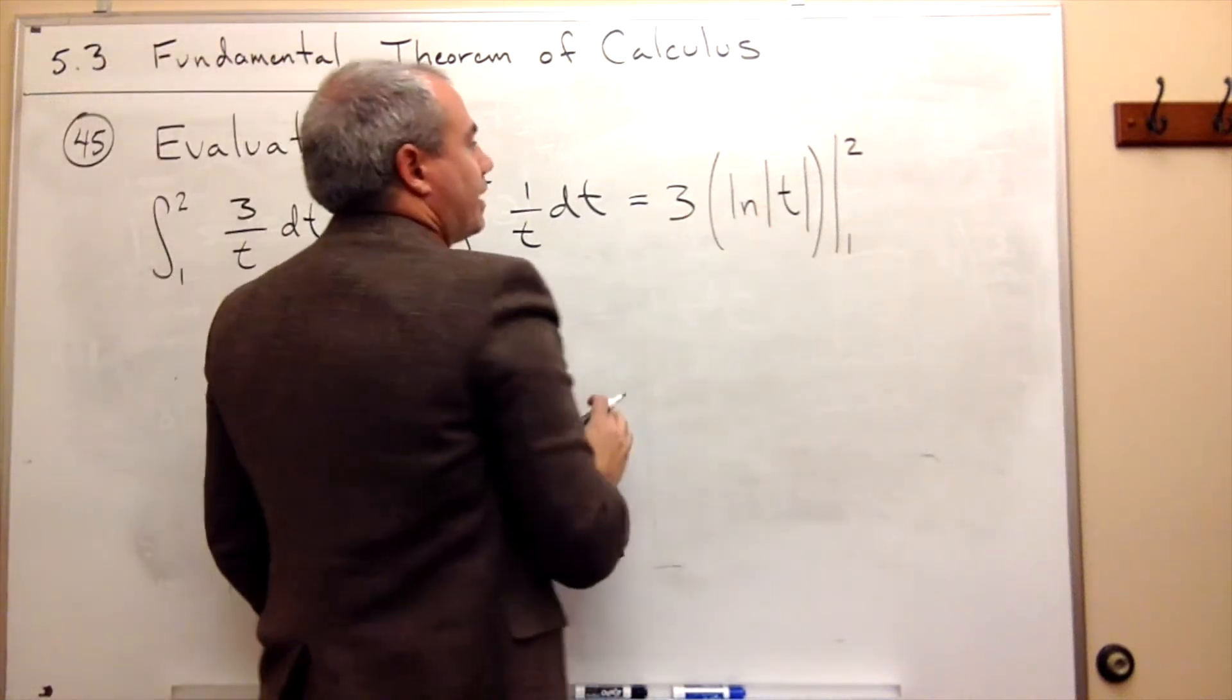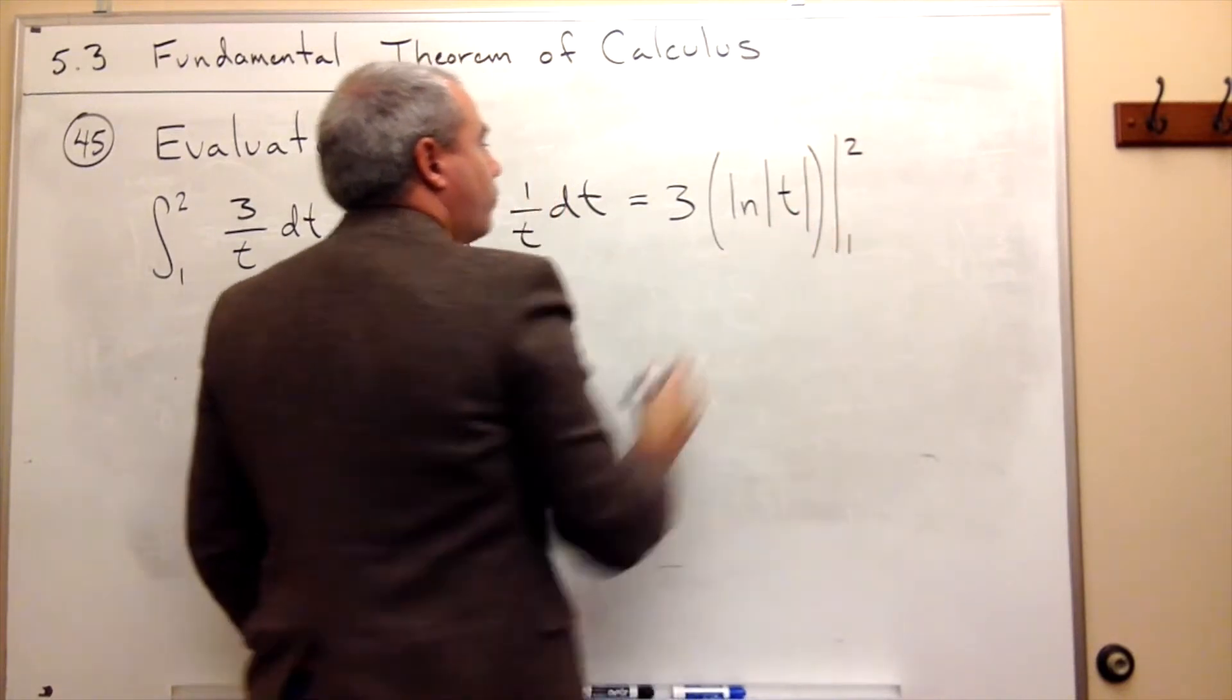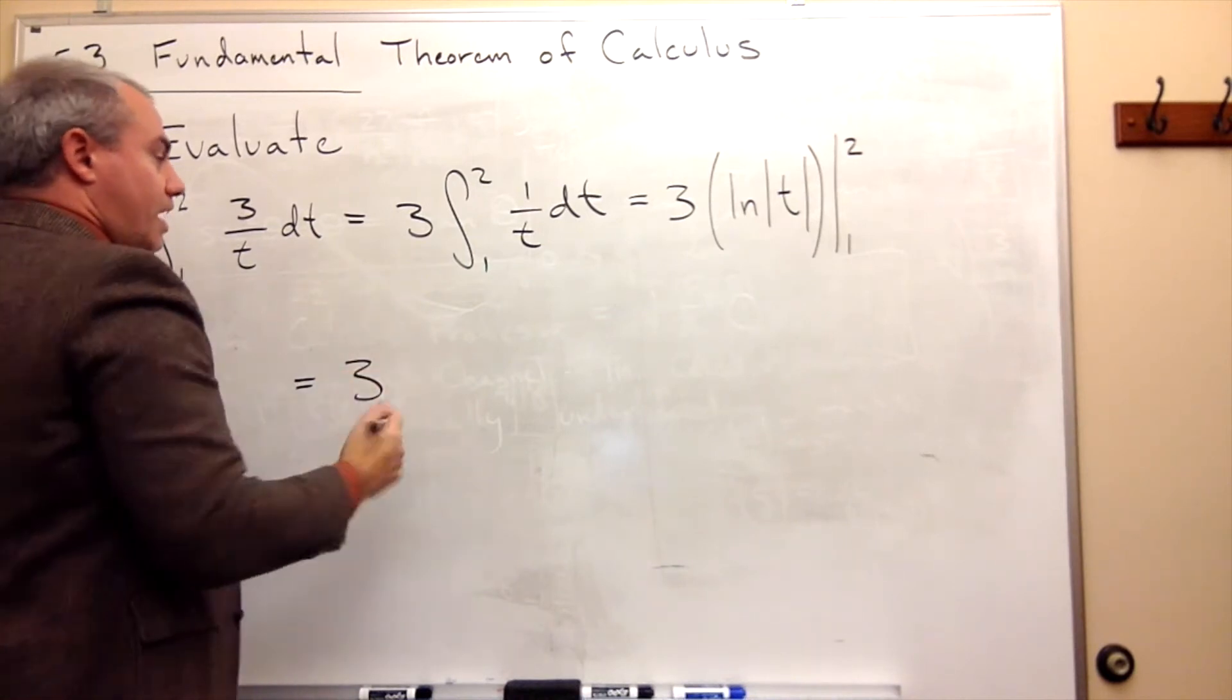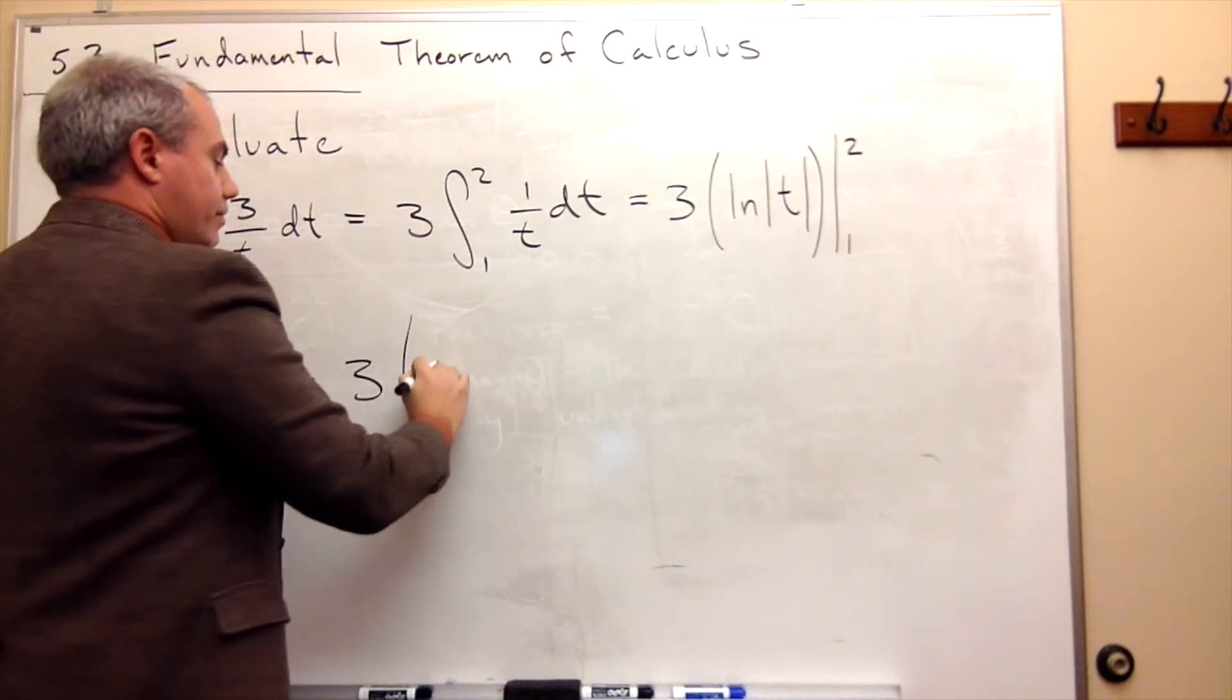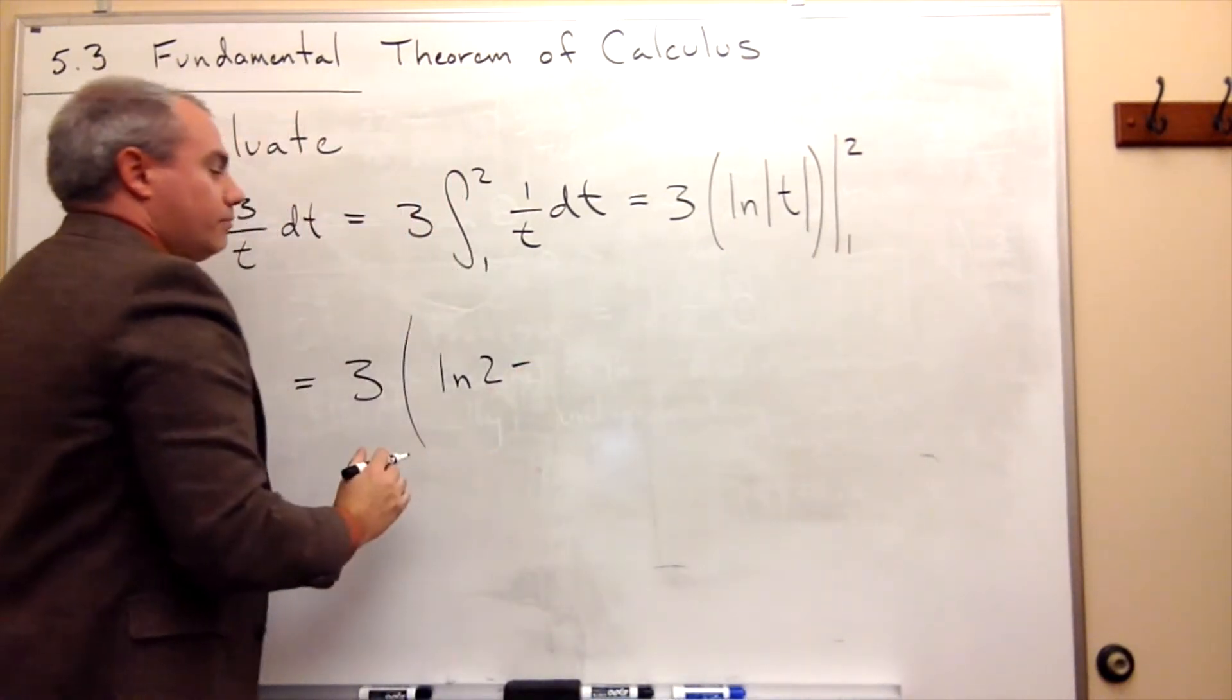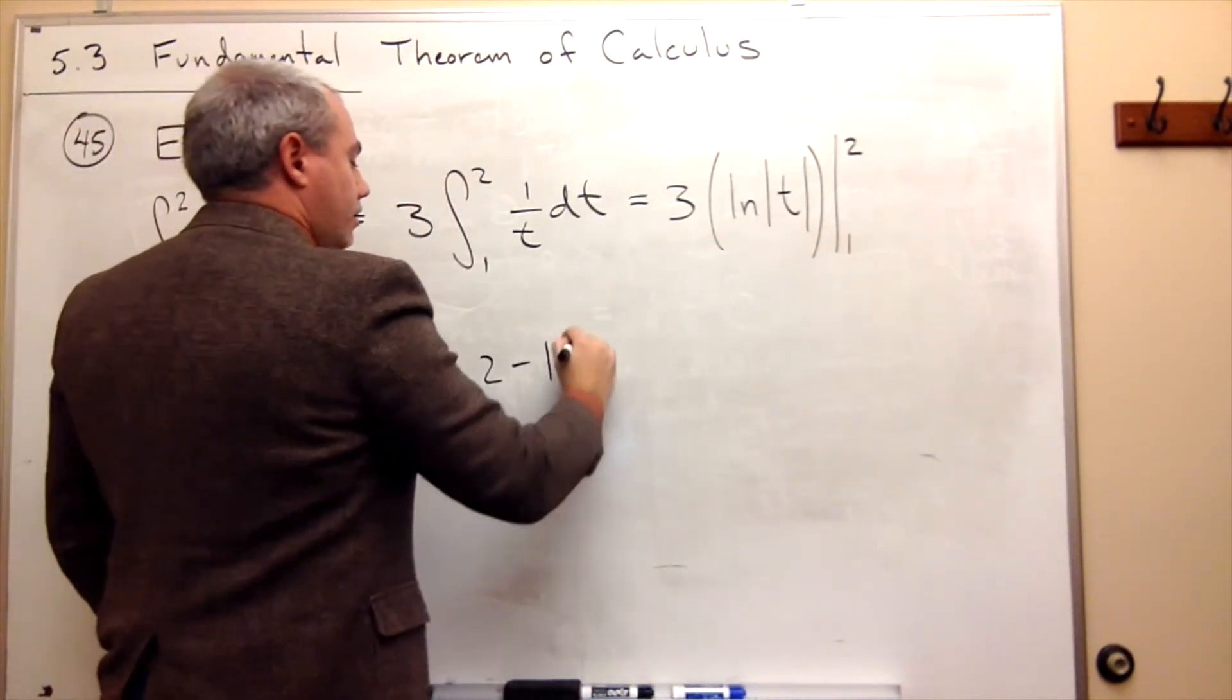Okay, so now let's plug things in. What we want to do is take 2 and plug it in first, and then subtract plugging in 1. In other words, we'll have 3 times, first I plug in the 2 and I get ln 2, and then I subtract plugging in 1. So I plug in 1 and I get ln of 1.